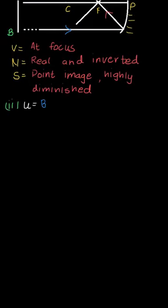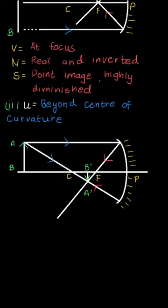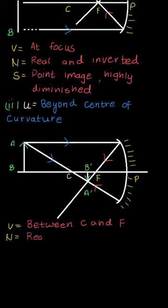For the second case, the object comes closer — that is, beyond the center of curvature. The first ray falls parallel so it passes through the focus, and the other ray passes through the center of curvature so it goes unaffected. The image is formed between the center of curvature and focus. The image is totally inverted and diminished. So: image distance is between C and F, nature is real and inverted, size is diminished.